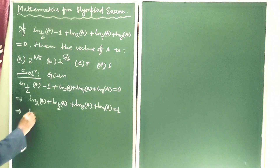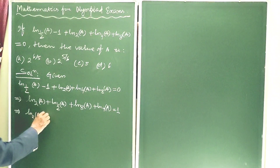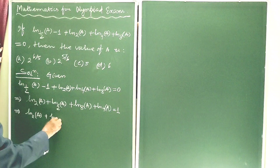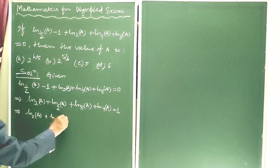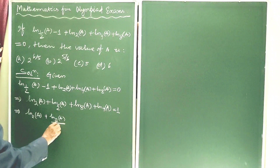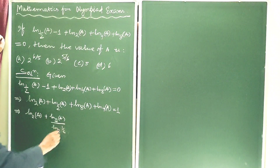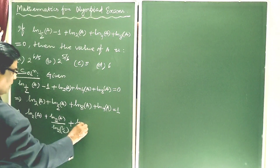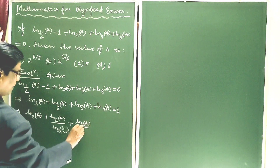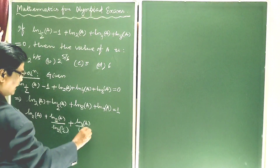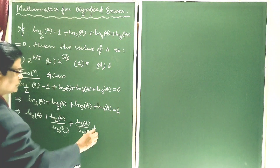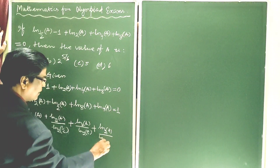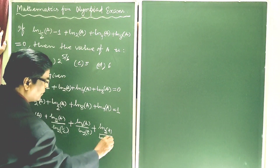This is ln base 2 of A. Applying the change of base formula — ln base C of B can be written as ln B divided by ln C — we convert each term. This gives us: ln base 2 of A divided by ln base 2 of 2, plus ln base 2 of A divided by ln base 2 of (one-half), all equal to 1.